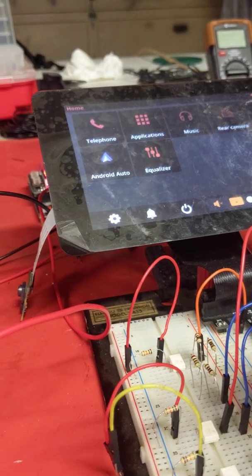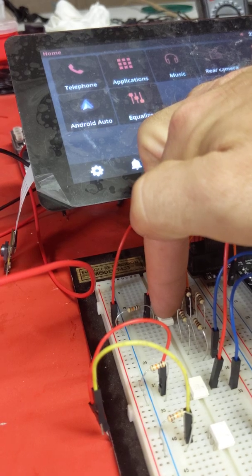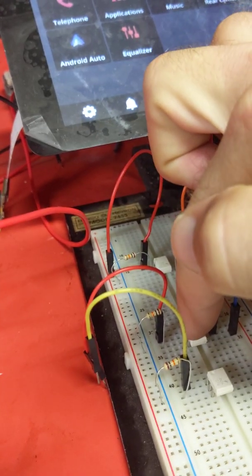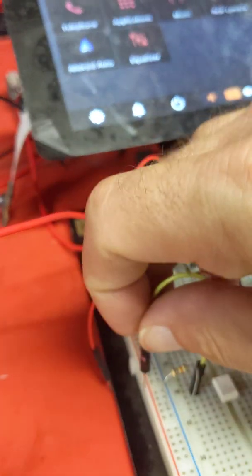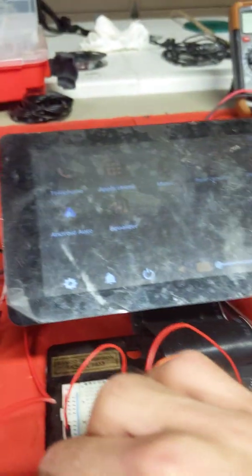Alright, so here this is my safe shutdown, this is my reverse cam, this is my backlight. So whenever it senses power to the first one it'll dim the screen.